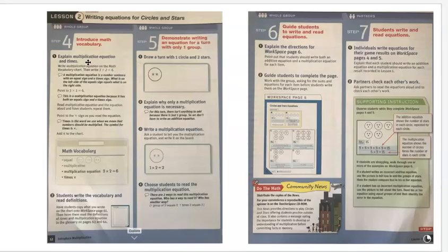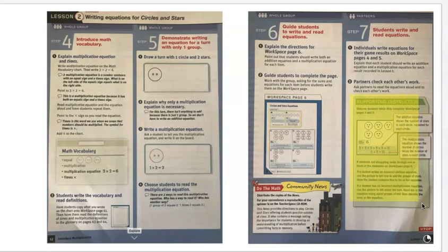In the next parts of the lesson, again, you'll see step four, step five, step six, and step seven. A couple things to make note of are this supporting instruction box, which shows you how to support misunderstandings for students. So it kind of helps you get ahead of things that students might struggle with in responses to some of their questions.